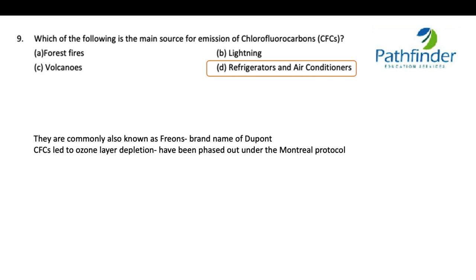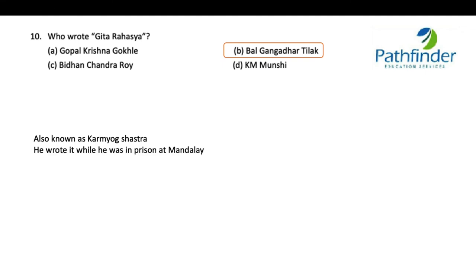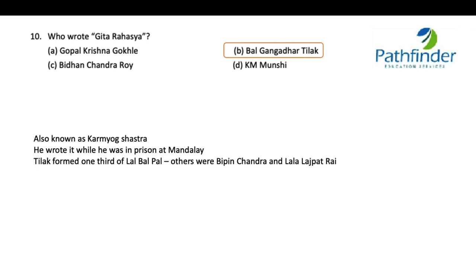Next: who wrote the Gita Rahasya? The correct answer is Bal Gangadhar Tilak. This book is also known as Karma Yoga Shastra. Tilak wrote this book while he was in prison at Mandalay. He was part of the famous trio called Lal-Bal-Pal, the others being Bipin Chandra Pal and Lala Lajpat Rai. He was the first advocate of Swaraj.